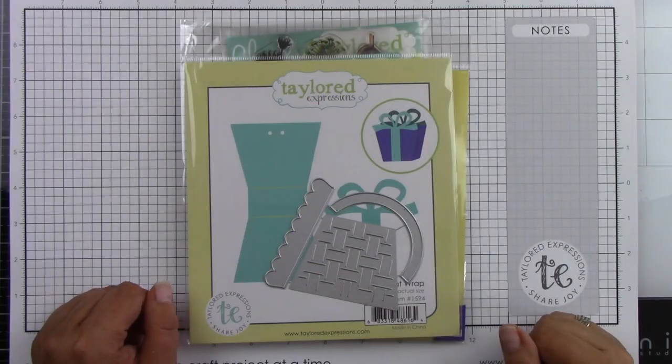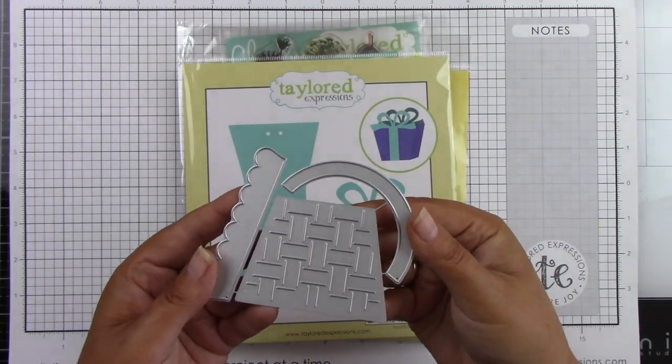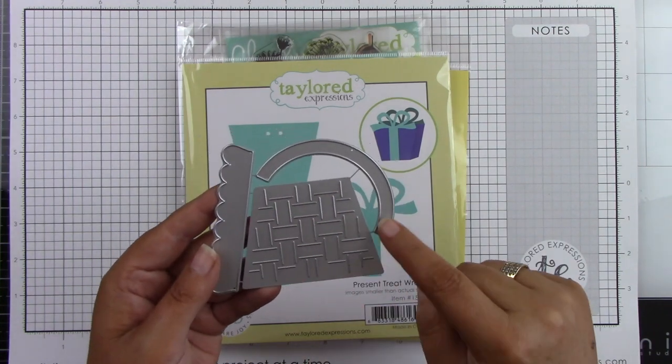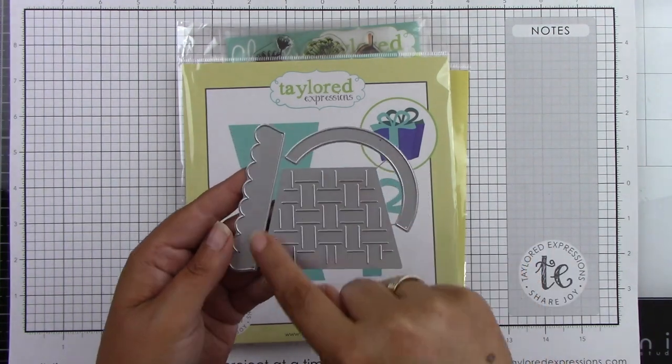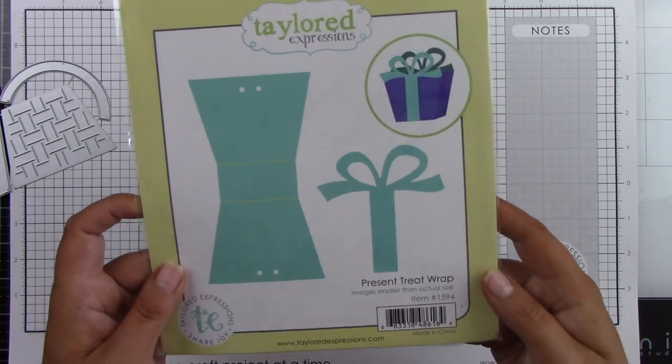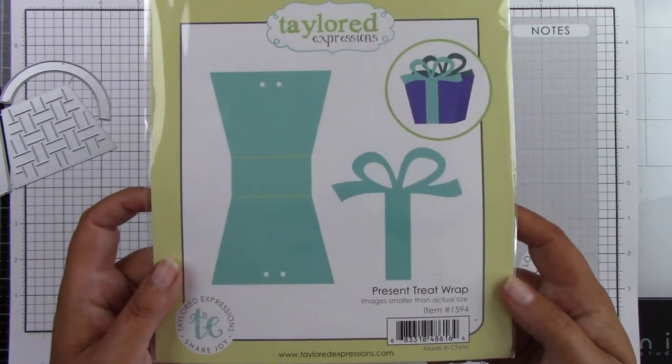Now here is that basket accessory and you get the cute little basket weave, you have a handle and a cute little scallop. Then the present treat wrap die, so those two pieces go together.